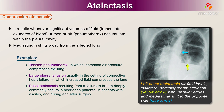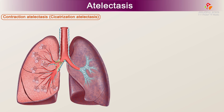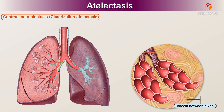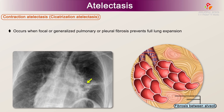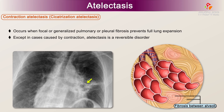Basal atelectasis results from a failure to breathe deeply, commonly occurring in bedridden patients, in patients with ascites, and during and after surgery. Contraction atelectasis, or cicatrization atelectasis, occurs when focal or generalized pulmonary or pleural fibrosis prevents full lung expansion. Except in cases caused by contraction, atelectasis is a reversible disorder.